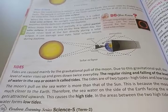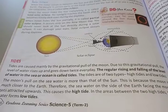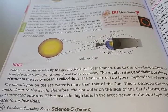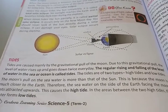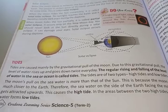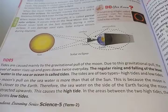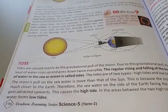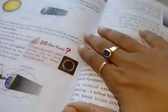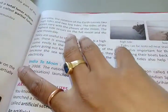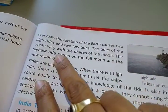The Moon's pull on the sea water is more than that of the Sun because the Moon is much closer to the Earth. Therefore, the sea water on the side of the Earth facing the Moon gets attracted upwards. This causes high tides. In the areas between the two high tides, water forms low tides. Every day, the rotation of the Earth causes high tides and low tides.